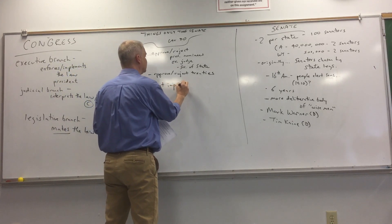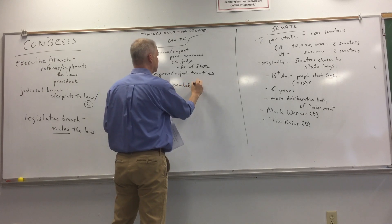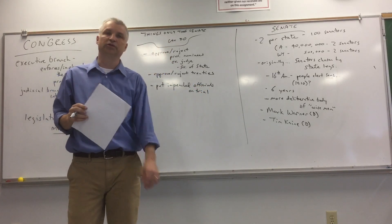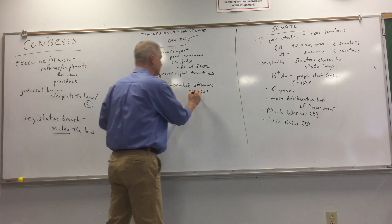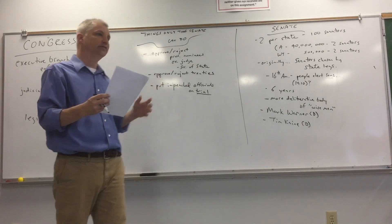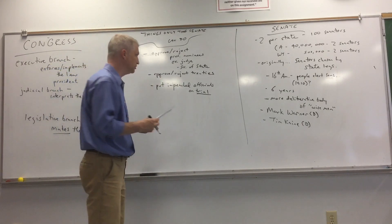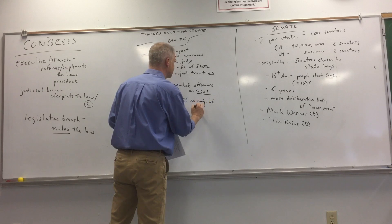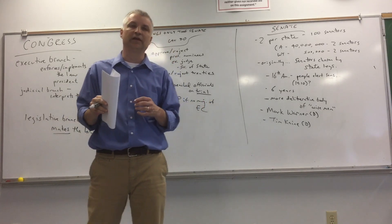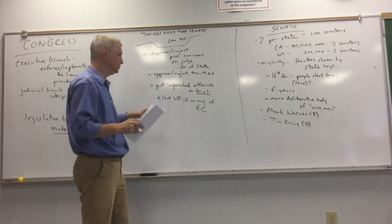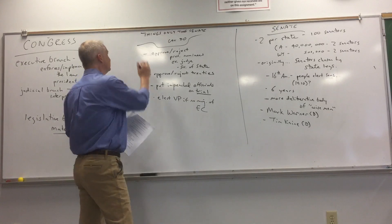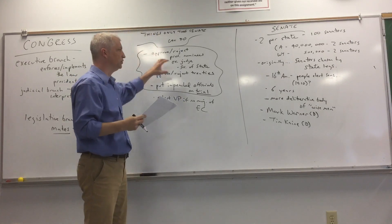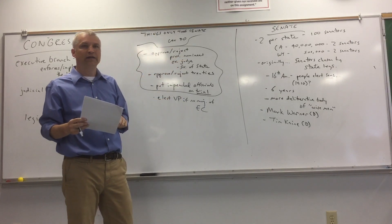If the House impeaches a president or a judge, that person then goes on trial in the Senate. In our case, Trump was impeached by the House, but he went on trial in the Senate. The Senate voted not to remove him from office, so the final decision was the Senate's. And in the situation where no candidate gets 270 electoral votes, the House decides who the president is, but the Senate decides who the vice president is.